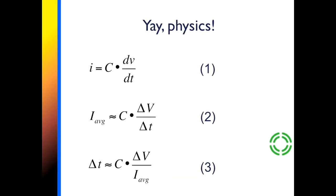Physics to the rescue. At any point in time this equation tells us that the current into and out of a capacitor is equal to its capacitance times the rate of change of the voltage across it. Now for any two points that are reasonably close in time, their average current is approximately equal to the capacitance times the voltage difference, delta V, between those two points divided by the time difference between those two points, delta T. We can now solve for delta T if we know the capacitance, the voltage difference, and the average current.